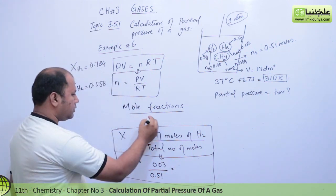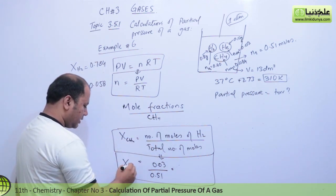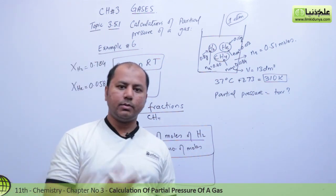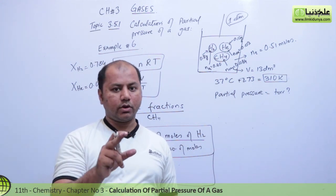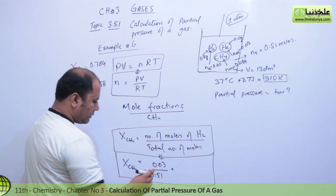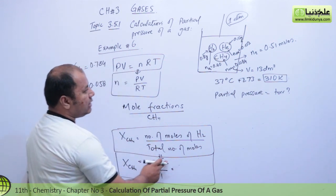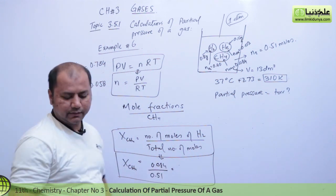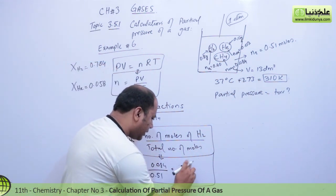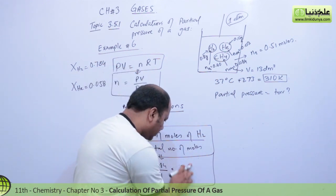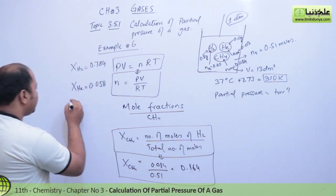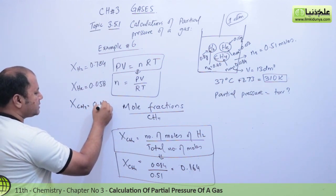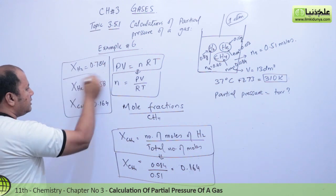Now for methane: X(CH₄) = 0.084 / 0.51 = 0.164. This is also less than unity. This numerical is very important — it will likely appear in your board exam practicals. So we now have all three mole fractions: X(H₂) = 0.784, X(He) = 0.058, X(CH₄) = 0.164.